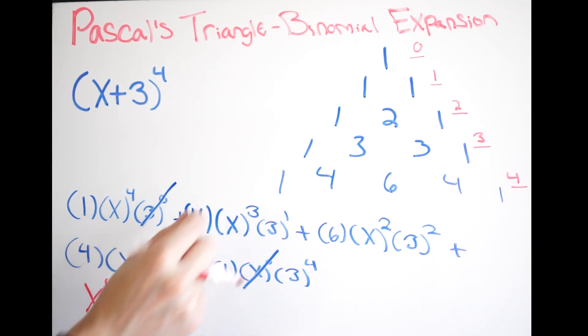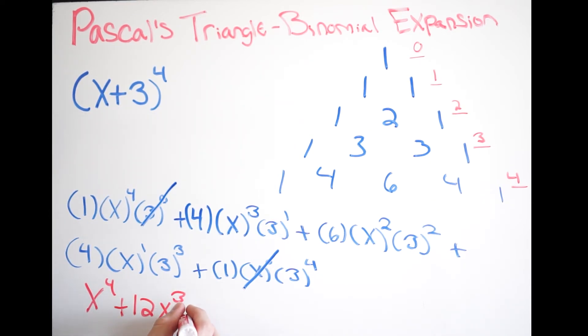Moving on right here. So I like to multiply the coefficients first. We know that this is just three. Three to the first power is three. So four times three is twelve. So we get plus twelve. And then x cubed. All right. And now just moving on. We're going to get three squared, which is nine. Times six. That's fifty-four. So we get fifty-four x squared.